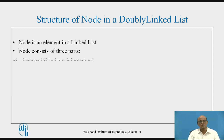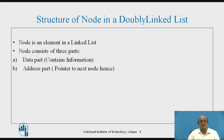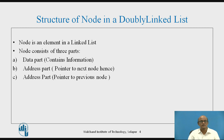Which are the three parts? The first part is called the data part, which contains the information — may be integer, character, or any data type. The second part contains the address part, which is a pointer pointing to the next node, or holding the address of the next node. The third part is again an address part which points to the previous node, storing the address of the previous node in the list.